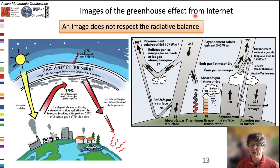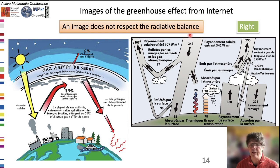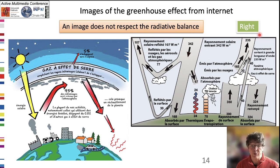This one-layer model is a simplified description of the greenhouse effect, and several images from the internet show radiative budgets combining observation and state-of-the-art models. These budgets show a balance between the incoming solar flux and the outgoing fluxes due to an albedo of 30% — the reflected part — and an infrared flux to space.